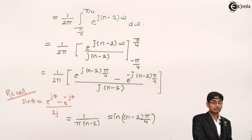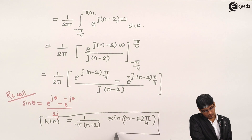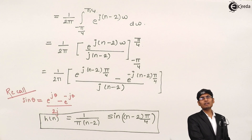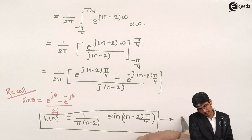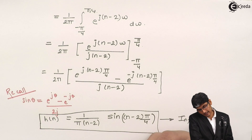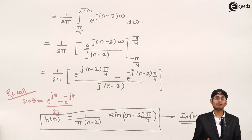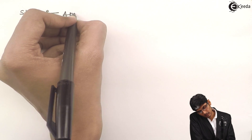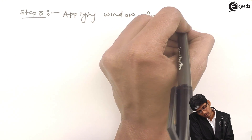That is the required answer for h(n). But it is not over, because the limit on n will be infinite. I can put any value of n and get some answer, so h(n) will be of infinite length. After finishing step 2, you are bound to get an infinite length sequence. To make it finite, I will apply a window function. Let us go to step 3: applying the window function.